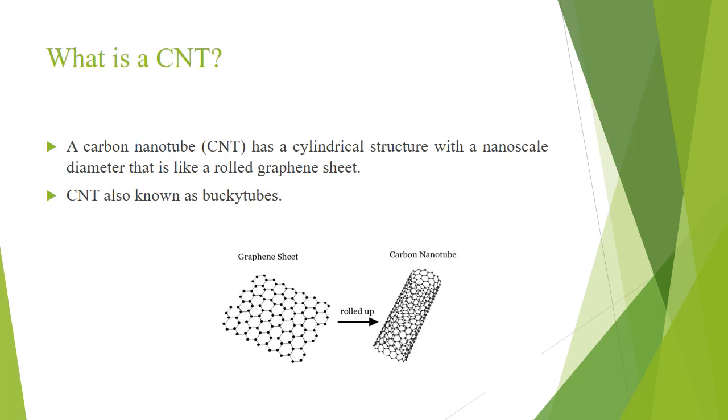So first of all we should understand what is carbon nanotube. It is a cylindrical structure that is made by graphene sheet, a rolled up sheet of graphene is called carbon nanotube. It is also known as buckytubes.